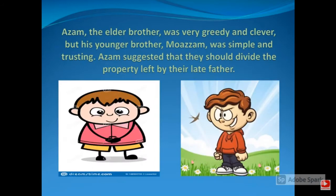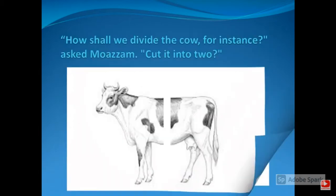Assam, the elder brother, was very greedy and clever, but his younger brother Moazam was simple and trusting. Assam suggested that they should divide the property left by their late father.